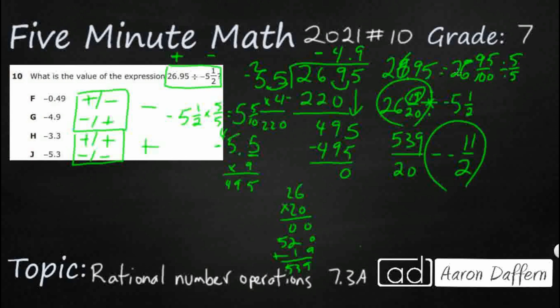And then if I want to, I can just invert and multiply. So it would be 539 over 20 times negative 2 elevenths. Yeah, that looks a bit confusing. I'd go with the decimal. Either way, our answer here is going to be G.